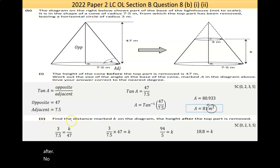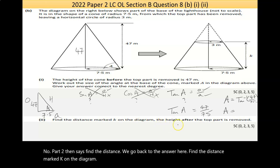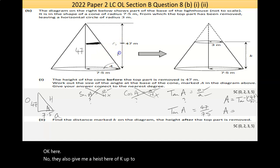Now, part two then says, find the distance, let me go back to the answer here, find the distance marked K on the diagram, the height after the top part is removed. Now, in a sense, what they've done is, they've cut this at some stage, here. Now, they also give me a height here of K. Up to that point is K. Now, we can equate the radii with the different heights.